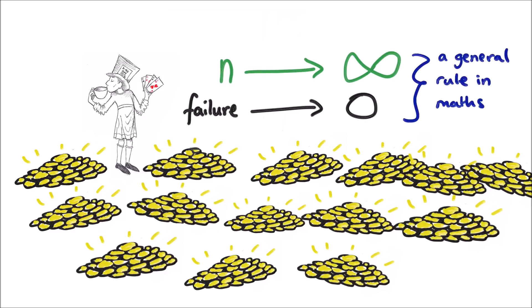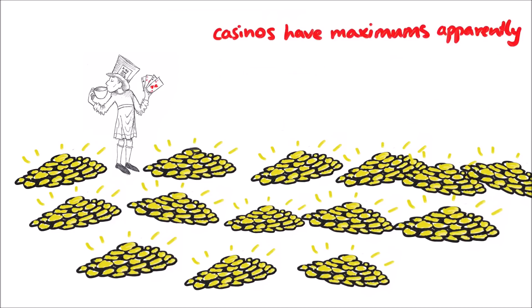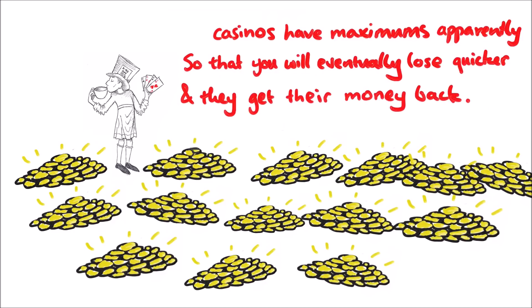As n approaches infinity, the chance you can fail goes to zero. In the version where a person can always afford to gamble more, they will always make two.